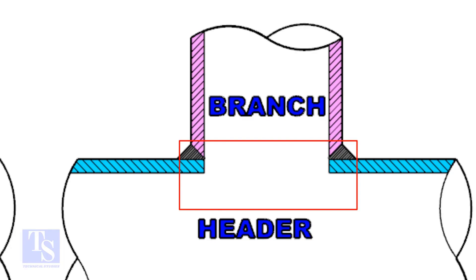And on the header pipe, a hole is there. The diameter of the hole on the header pipe is the same as the inside diameter of the branch pipe.